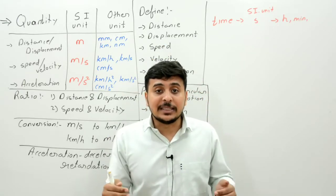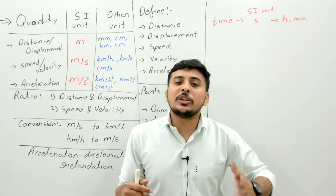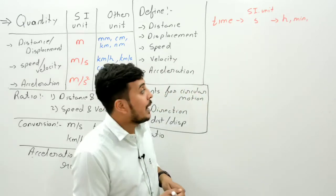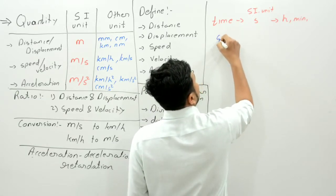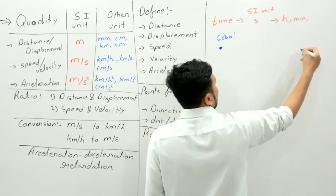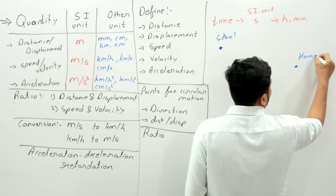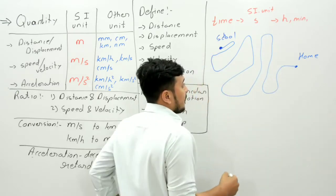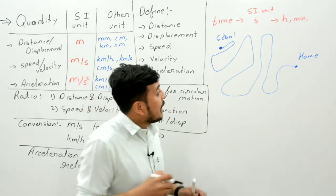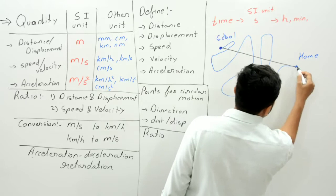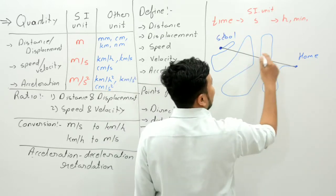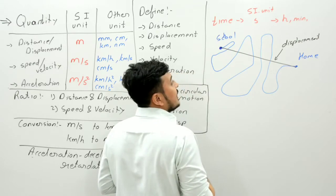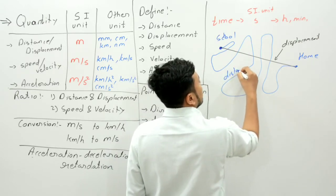Displacement: the shortest distance between the first and the last position of an object is known as displacement. For example, suppose this is our school and we want to go to our home. We can travel by any roundabout path — that full path is our distance, shown by the blue colored line. But if we take the straight line from school to home, that black colored line is our displacement.